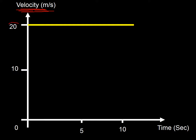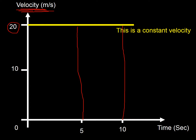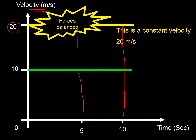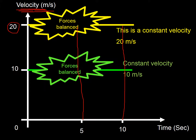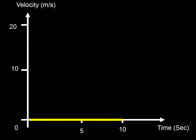Here we're looking at a constant velocity of 20 meters per second — after 5 seconds it's doing 20, after 10 seconds still 20. There's another one at a constant velocity of 10 meters per second. In both cases the forces are balanced — the forwards force equals the backwards force. There's also a line at the bottom: that's a constant velocity of zero meters per second — the object is at rest, forces balanced.